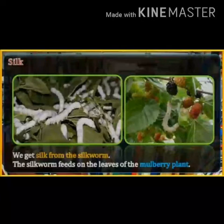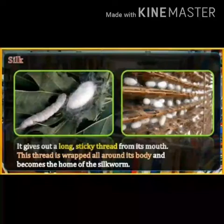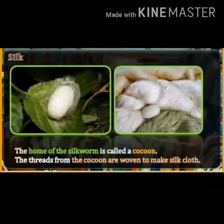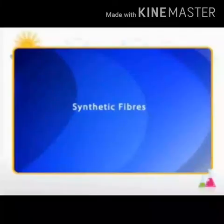Next, silk. We get silk from the silkworm. The silkworm feeds on the leaves of the mulberry plant. It gives out a long sticky thread from its mouth, which is wrapped all around its body and becomes the home of the silkworm. As you can see in the picture, the home of the silkworm is called the cocoon. The threads from the cocoon are woven to make silk cloth, which is very soft.